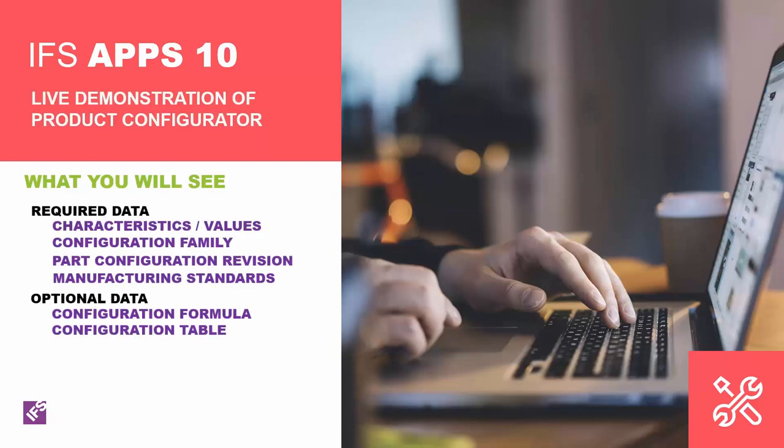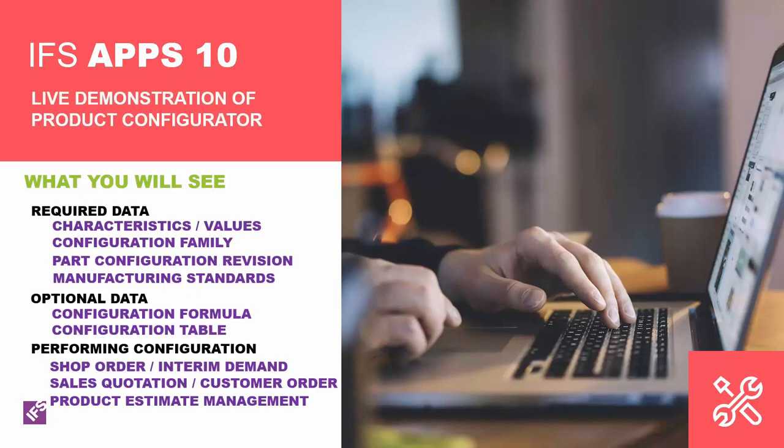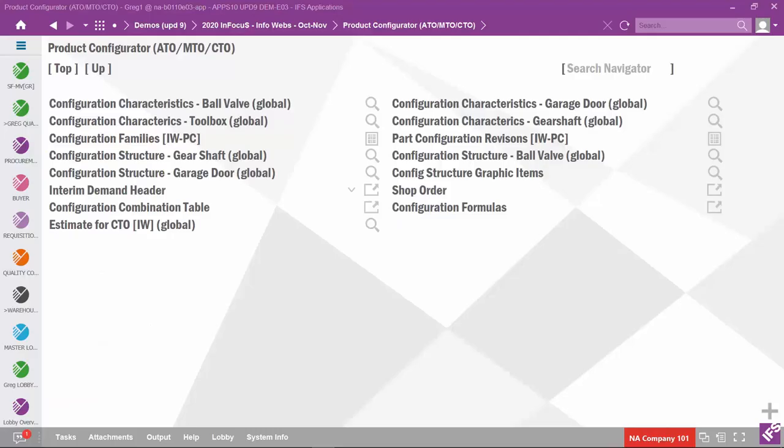Second, I'll show some optional data that might be helpful: configuration formula and configuration table. Third, I'll perform some product configurations — a configuration for a non-sales part in a shop order or interim demand header, a configuration for a sales part in a sales quotation or customer order, and a configuration for an incompletely configured product using product estimate management. That last approach eliminates the need to create a revision for what might be a one-off quotation. If you win the quotation, IFS Product Estimate Management can create a discrete part, discrete structure, and discrete routing directly from the estimate.